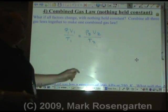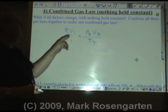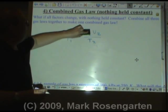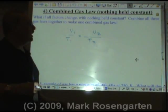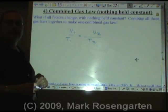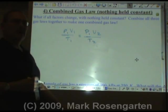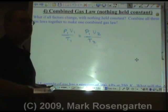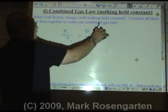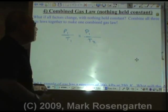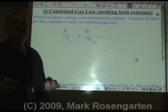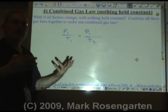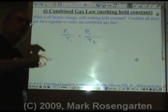In Charles' law, it's a relationship between volume and temperature, and pressure is held constant. Therefore, you can ignore it because it would just simply cancel out and you get Charles' law. In Gay-Lussac's law, it's a relationship between pressure and temperature. Volume remains constant, therefore you can cancel it out. So you can use the combined gas law to get any of the other three, and then you can solve problems, which is what we're going to do next.